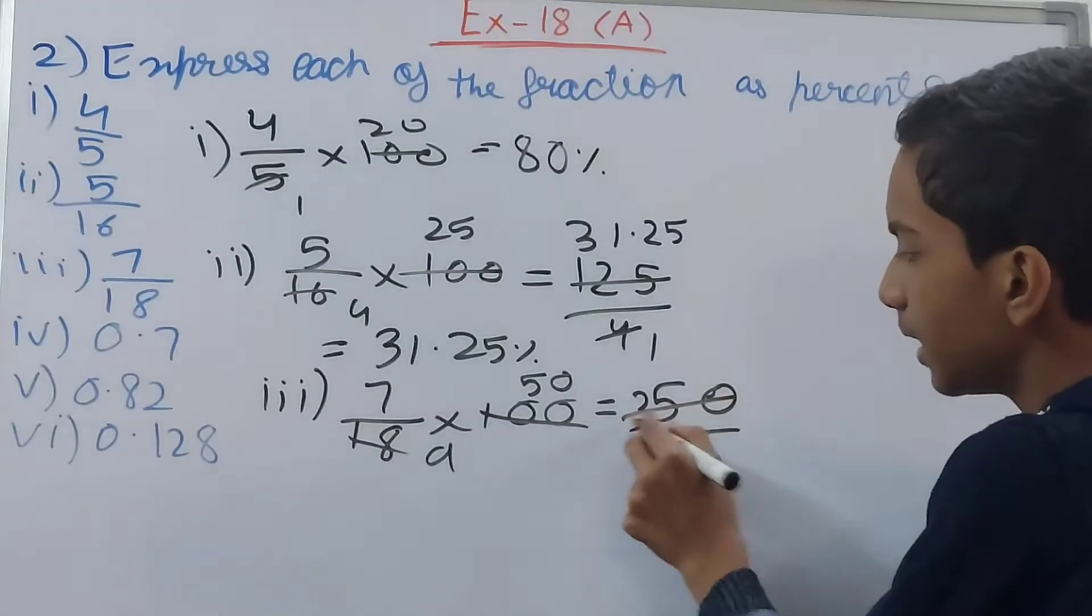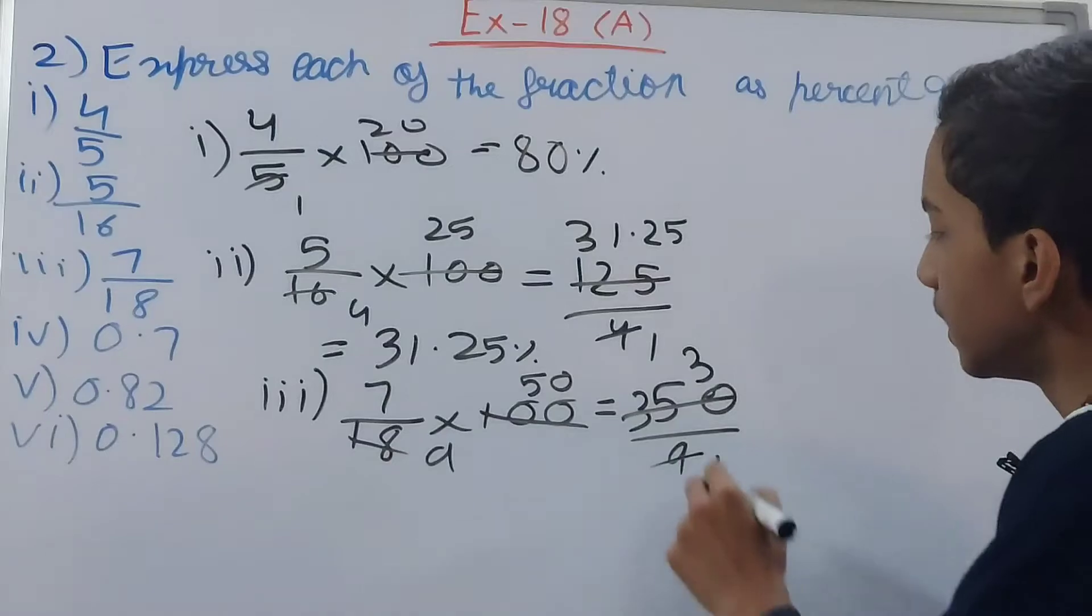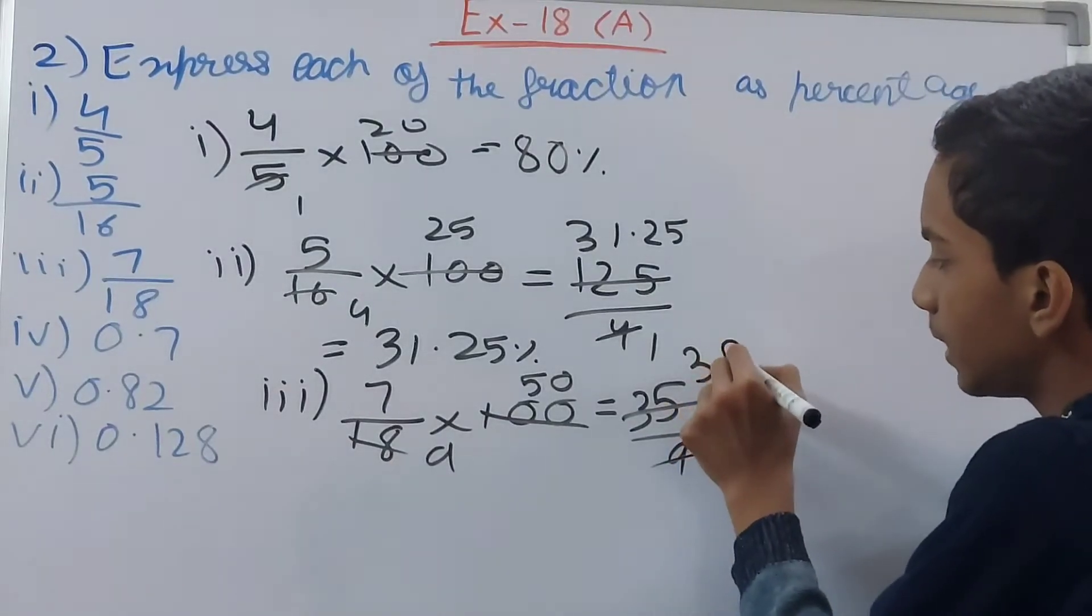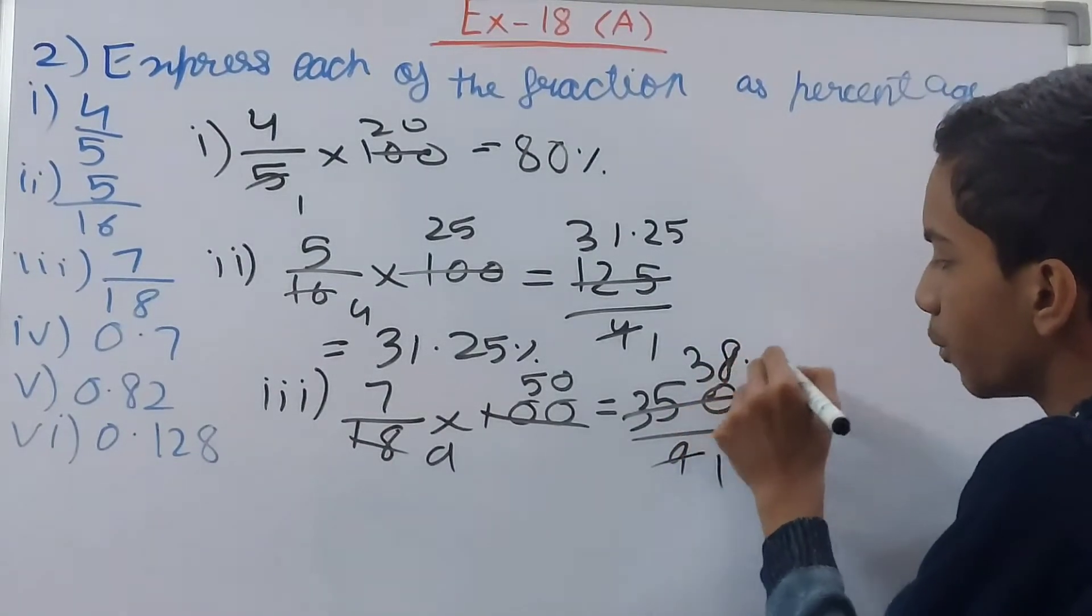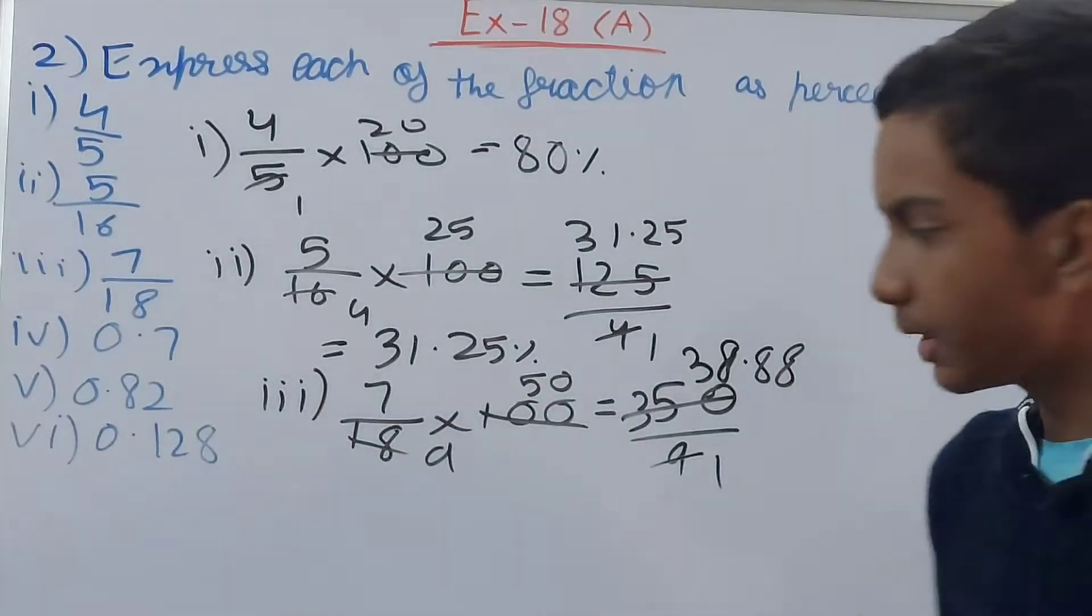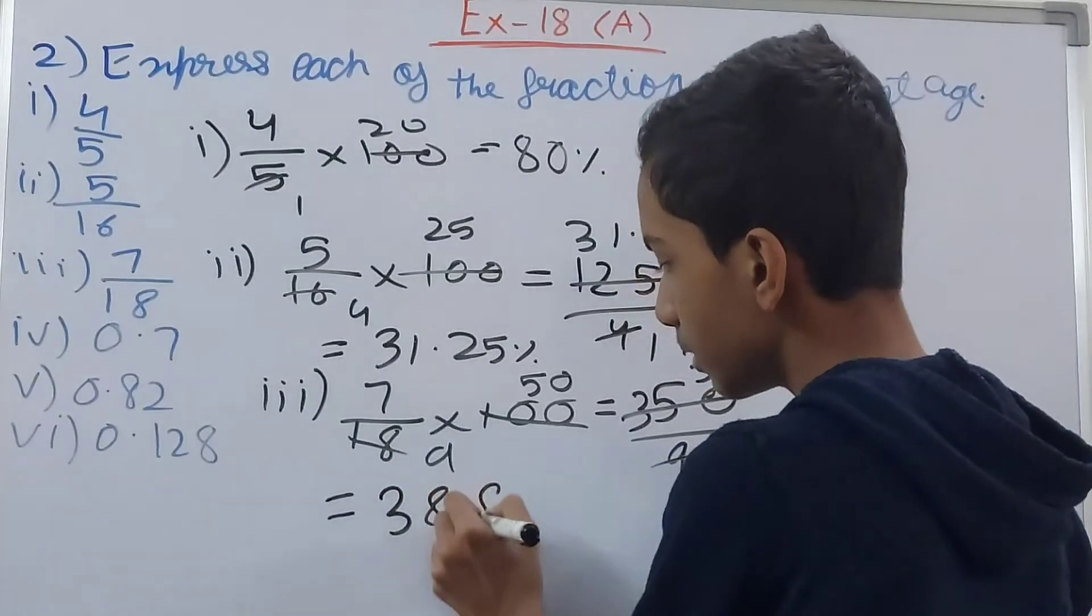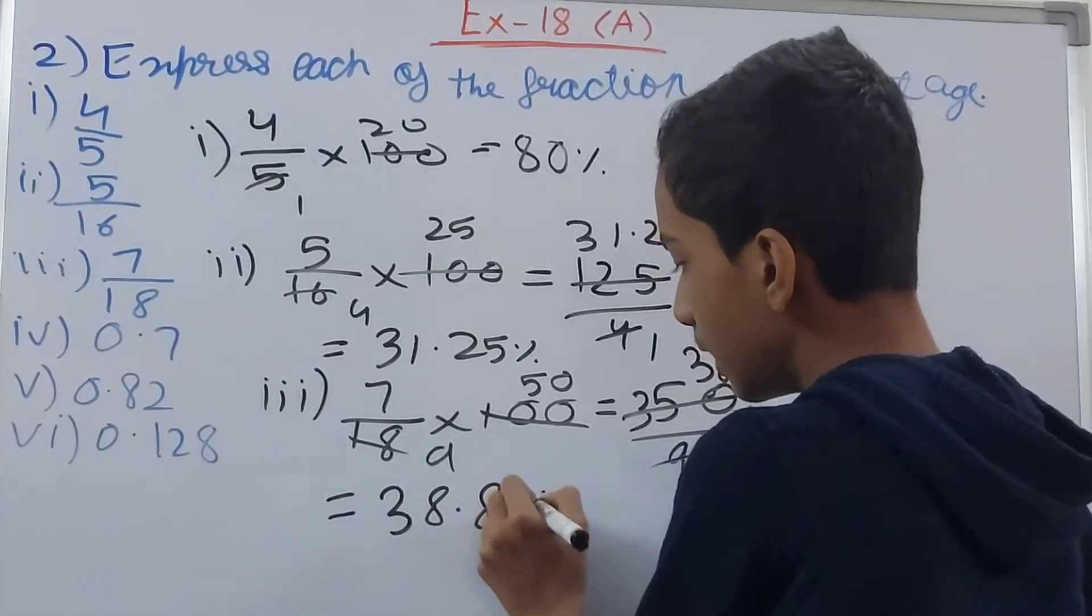So this becomes what? Cancel by 9. 35, so 3 times I will cut this 8 and 80. So 38.88 it will come somewhere around this. It becomes 38.88 percent.